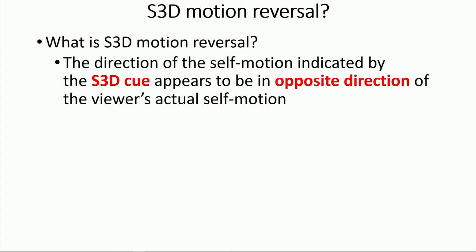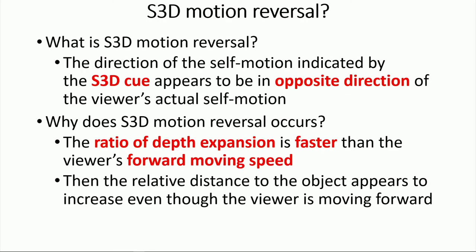Here, we need to think about what it means by motion reversal. It means the direction of the self-motion indicated by the stereoscopic 3D cue appears to be in the opposite direction of the viewer's actual self-motion or retinal motion. It can happen when the ratio of depth expansion becomes faster than the viewer's forward moving speed. In this case, relative distance to the object appears to increase even though the viewer is moving forward. So the background is moving farther backward faster than my forward moving. Then, in relative point of view, the background, the far object, seems to be moving backward. That's the motion reversal.